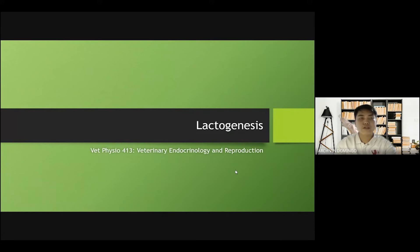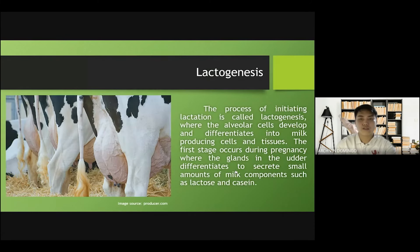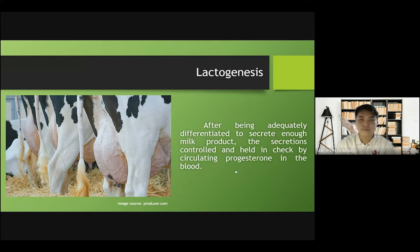Second, we need to talk about lactogenesis. Lactogenesis is the process of initiating lactation, where the alveolar cells develop and differentiate into milk-producing cells and tissues. The first stage occurs during pregnancy, where the gland differentiates to secrete small amounts of milk components such as lactose and casein. After being adequately differentiated to secrete enough milk product, the secretion is controlled and held in check by the circulating progesterone in the blood.